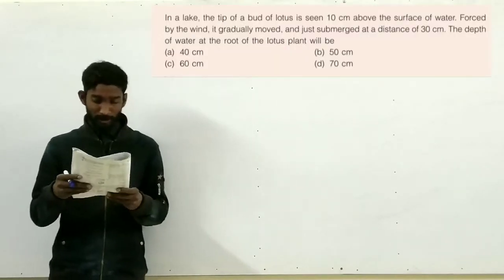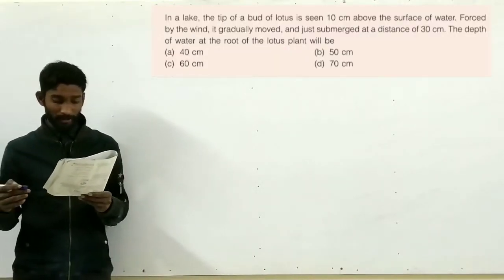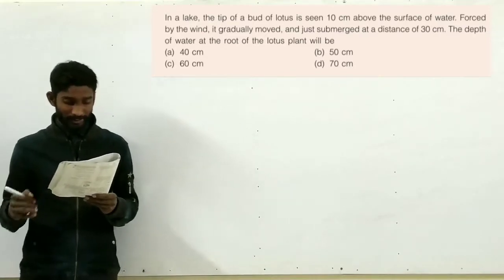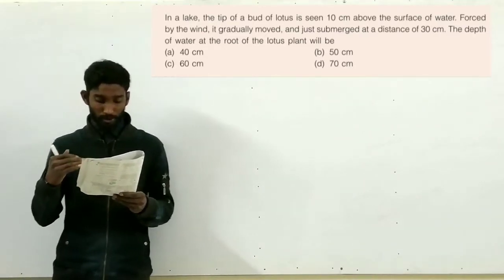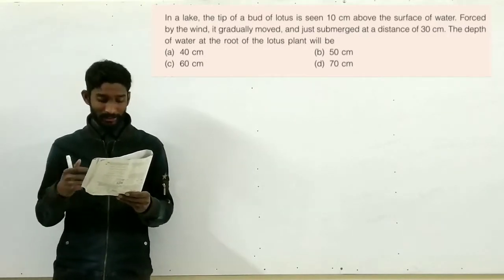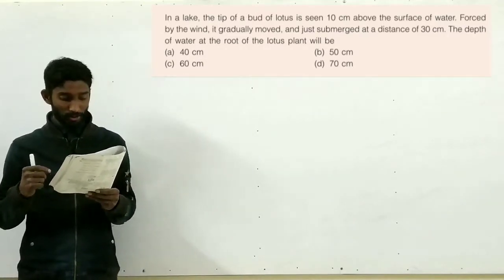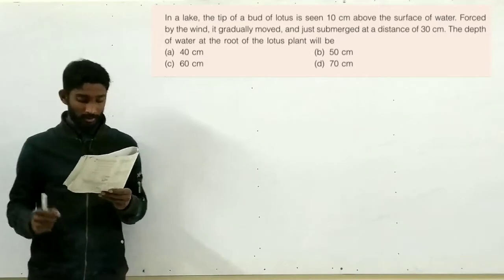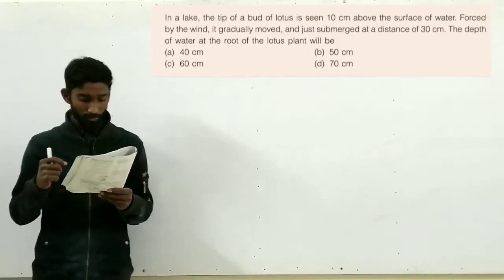So, question reads as: in a lake, the tip of a bud of a lotus is seen 10 cm above the surface of water. Forced by the wind, it gradually moved and just submerged at a distance of 30 cm.